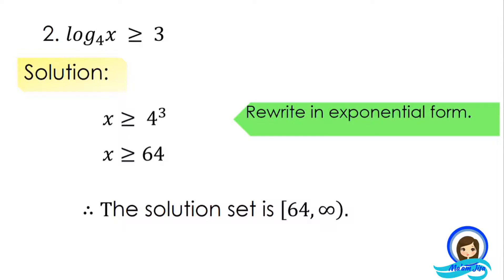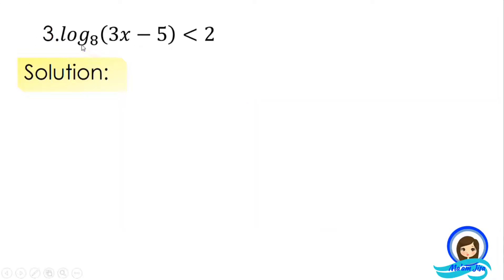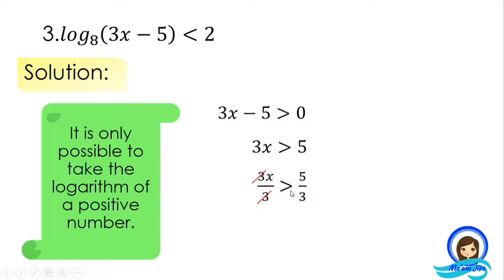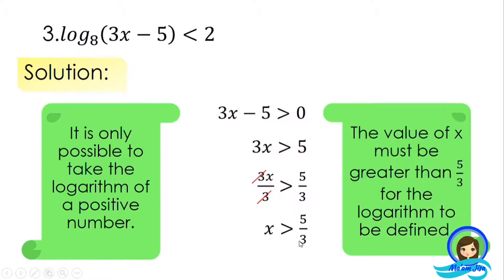Next example: logarithm of quantity (3x − 5) to base 8 is less than 2. First, we need to ensure that the expression is defined. It is only possible to take the logarithm of a positive number. So we set the expression greater than 0 to find the value of x for which the expression is positive. Transposing −5 to the other side gives us 3x > 5. Dividing both sides by 3, x is greater than 5/3.